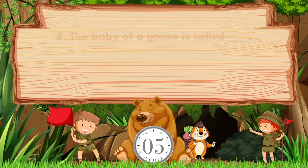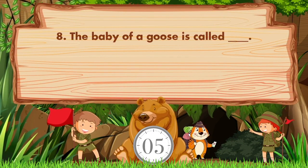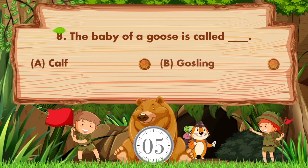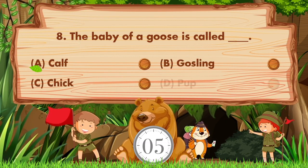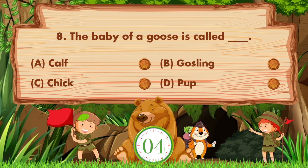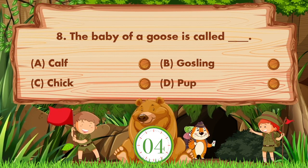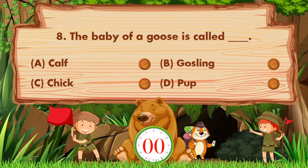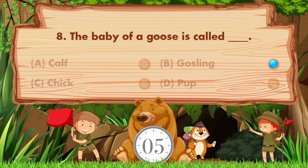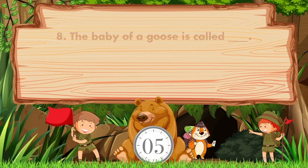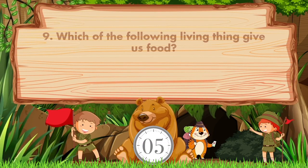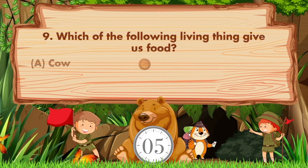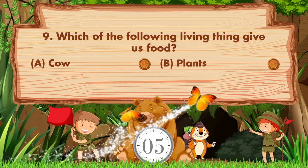The baby of a goose is called blank — option A is calf, B gosling, C chick, D pup. Answer is option B: gosling.